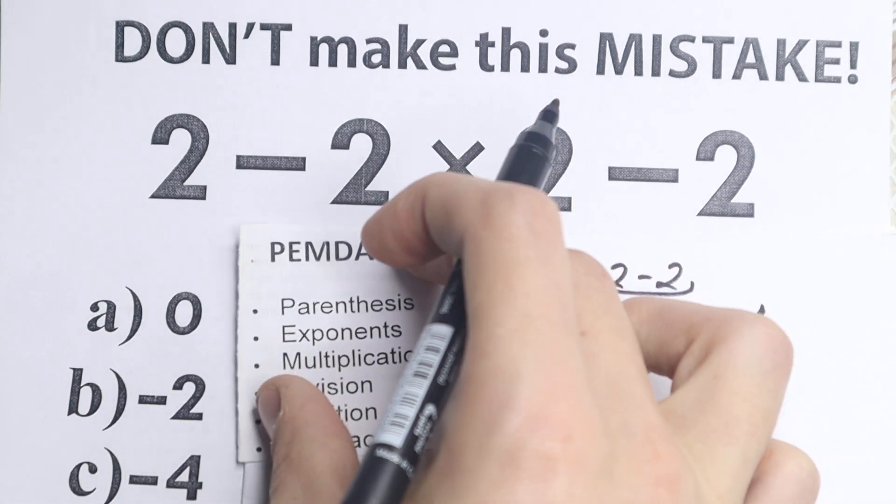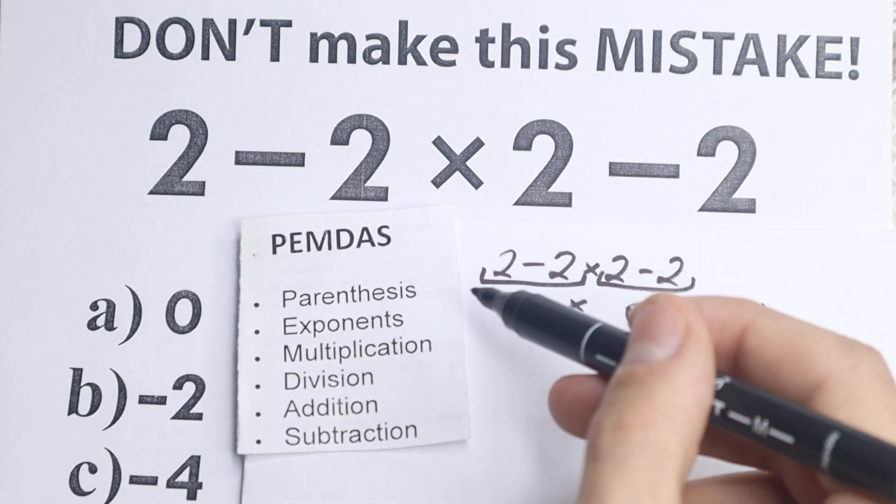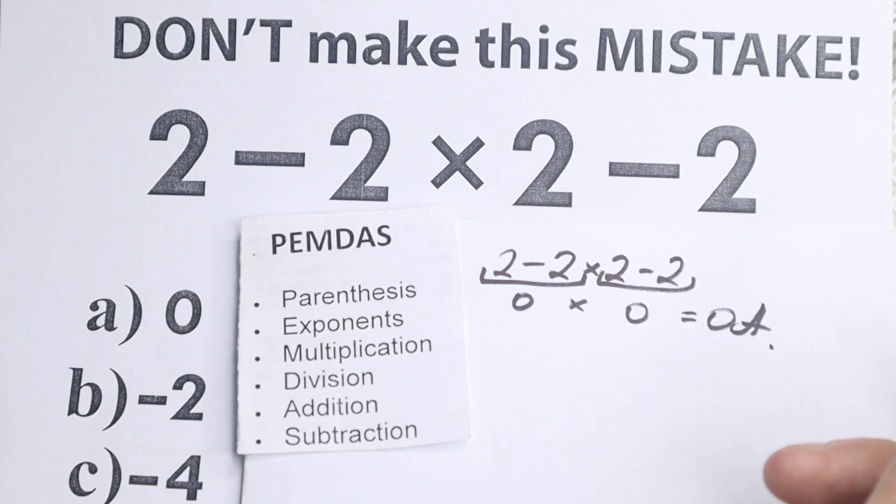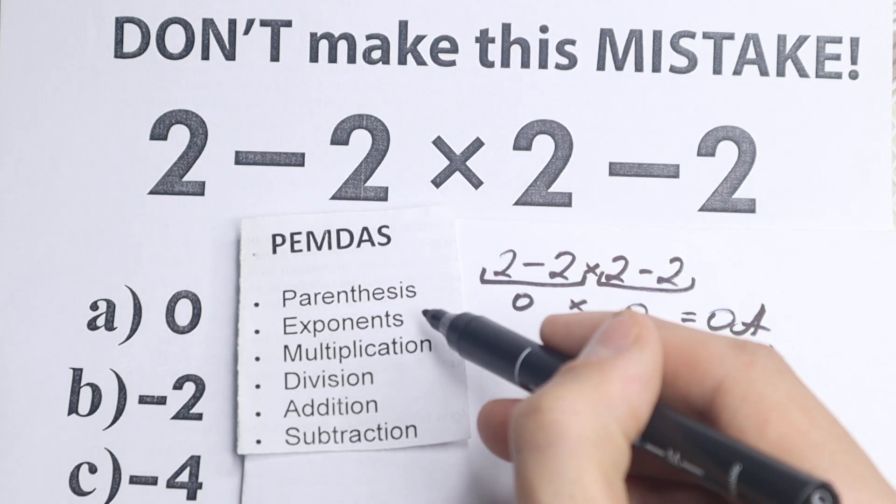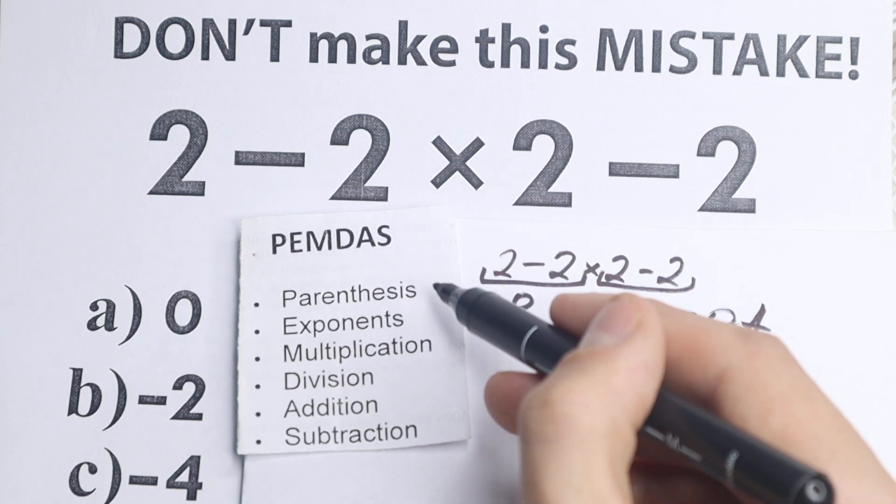So let's look at this order. First, we have Parentheses. This order works from top to bottom and from left to right. First step: parentheses. Are there any parentheses here? No, we don't have any parentheses. Moreover, we don't have any exponents, which is our second step.